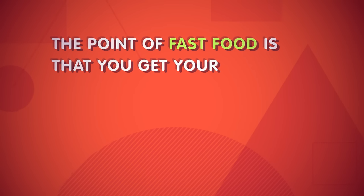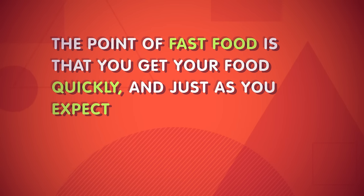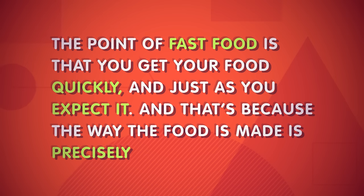Sociologist George Ritzer has called this the McDonaldization of society — the process by which the principles of the fast food restaurant have come to dominate the whole of society. Few things are more hyper-rational than fast food. The whole industry is based on the principles of efficiency, predictability, uniformity, and control. The point of fast food is that you get your food quickly and just as you expect it, because the way the food is made is precisely controlled. Ritzer argues that these principles are having a growing impact in our society at large. In education, for instance, we see more emphasis on standardized tests and tightly controlled curricula that run students through the system in four years flat.